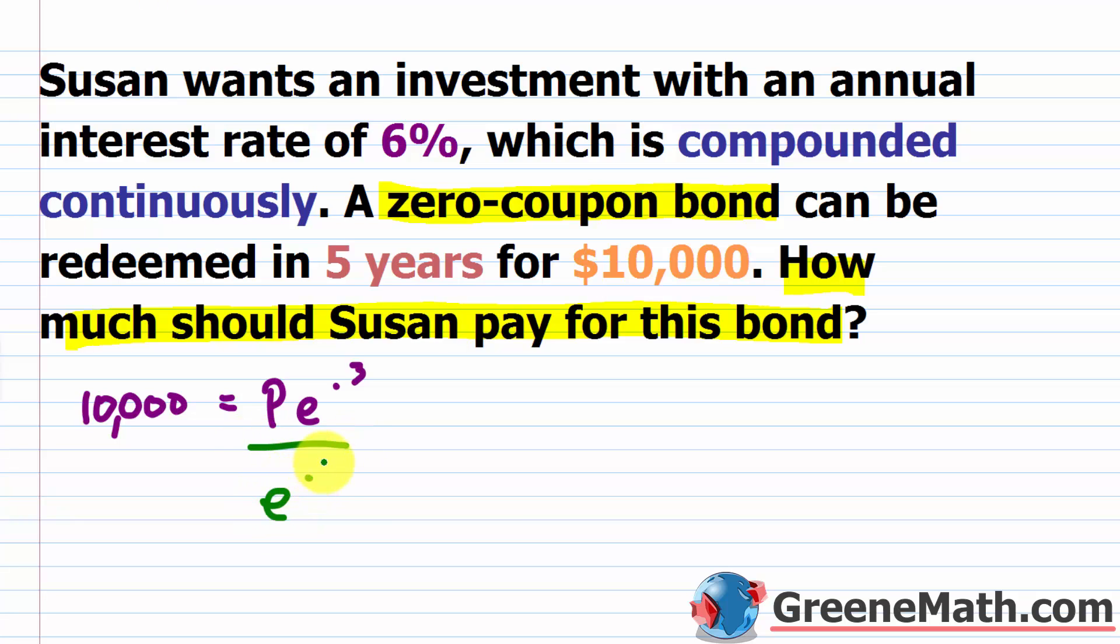So I want to divide both sides by E raised to the power of 0.3, and I'll have my answer. And you can punch that up on a calculator. And what you're going to get, it's going to be approximately $7,408.18. So that's how much she should pay for the bond. Again, she wants a 6% annual interest rate where it's being compounded continuously. And it's a zero coupon bond. So she pays this amount and five years later, she gets this amount. So let's go ahead and write that down as our answer. And just say that Susan should pay $7,408.18 for the bond.